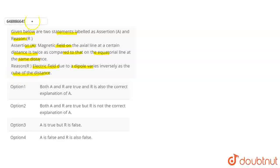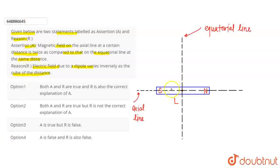Here we have an Assertion and Reason to solve. The assertion is understood from the diagram. Here we have seen the magnet with south end and north end. The magnet has two ends, north and south — this polarity is called a dipole. Here we have an axial line which passes through the center of the magnet, and the equatorial line is perpendicular to the magnet through its center.